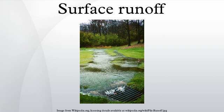Surface runoff is a major component of the water cycle. It is the primary agent in soil erosion by water. Runoff that occurs on surfaces before reaching a channel is also called a non-point source. If a non-point source contains man-made contaminants or natural forms of pollution, the runoff is called non-point source pollution. A land area which produces runoff that drains to a common point is called a drainage basin.